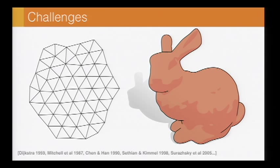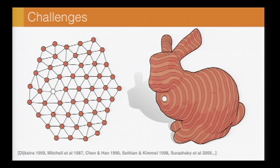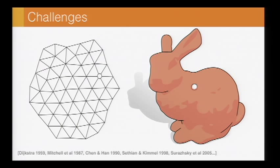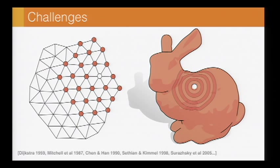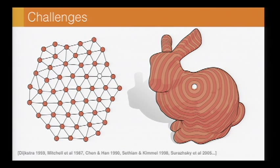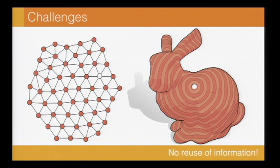Now typically the way you approach this problem, whether you're using Dijkstra's algorithm or fast marching or an exact polyhedral scheme, is you start at the source point and you march outward. But there are a couple of challenges with this approach. One is if I want to compute the distance to a different point, then I have to start all over again from scratch. And I can't take advantage of any of this computation that I did the first time around.